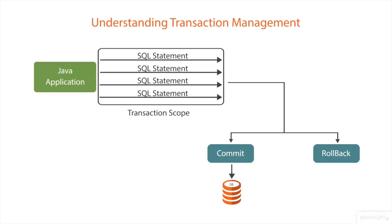Transaction management is used to manage the interrelated transactions efficiently by committing all the transactions or reverting all the transactions. That is, if all the SQL statements present in the transaction scope have been executed successfully, then we can commit the transaction, which stores the data permanently at the database. And if any one of the SQL statements present in the transaction scope is a failure, then we can roll back all the transactions such that no changes happen at the database.